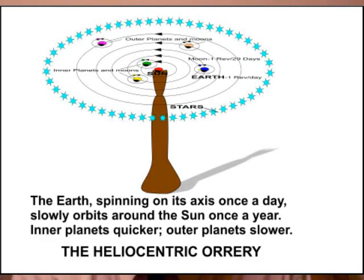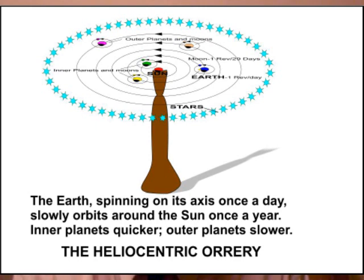Now if we look at one of these orreries — I've changed the diagram so that we imagine the Sun is now sitting on an orrery and the planets are going round it. You can see that if you imagine the arms going from the central Sun out to the different planets, the whole lot is rotating slowly at different rates depending upon how near the planet is to the Sun. Our Moon is going round the Earth also, and the Earth is spinning on its axis once every 24 hours.